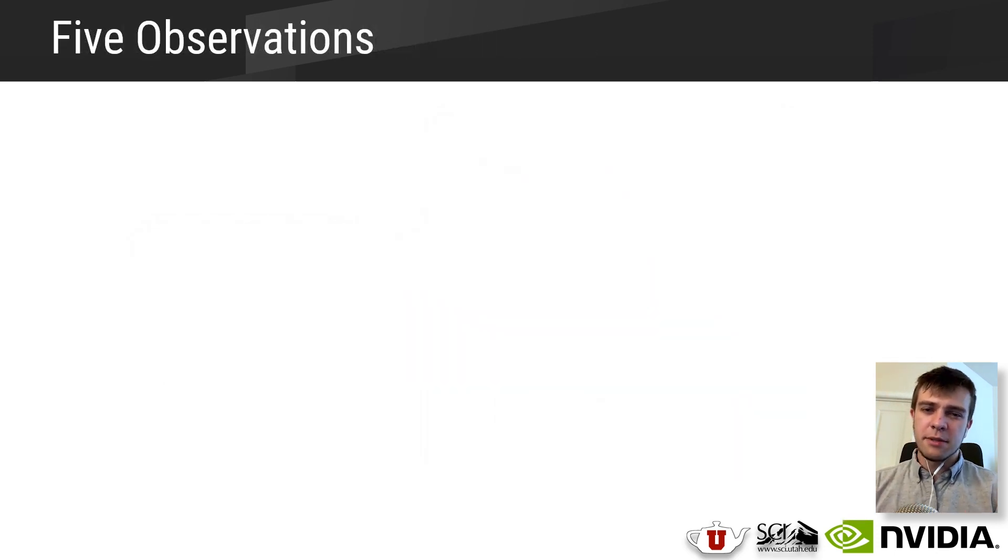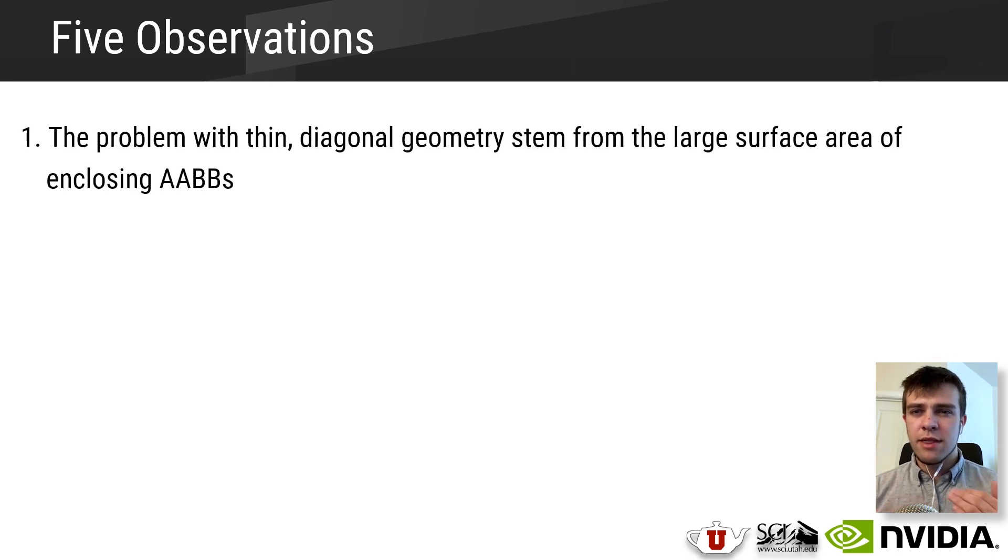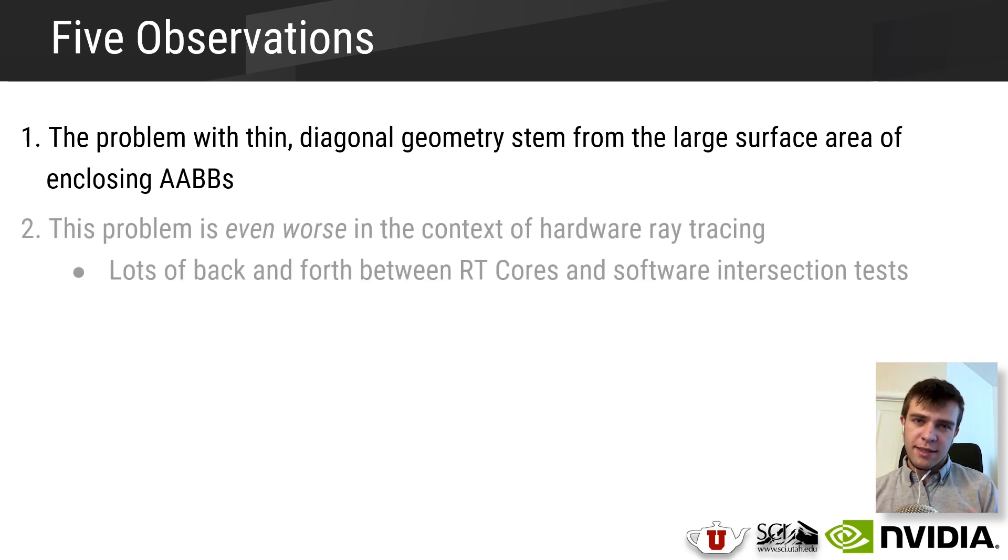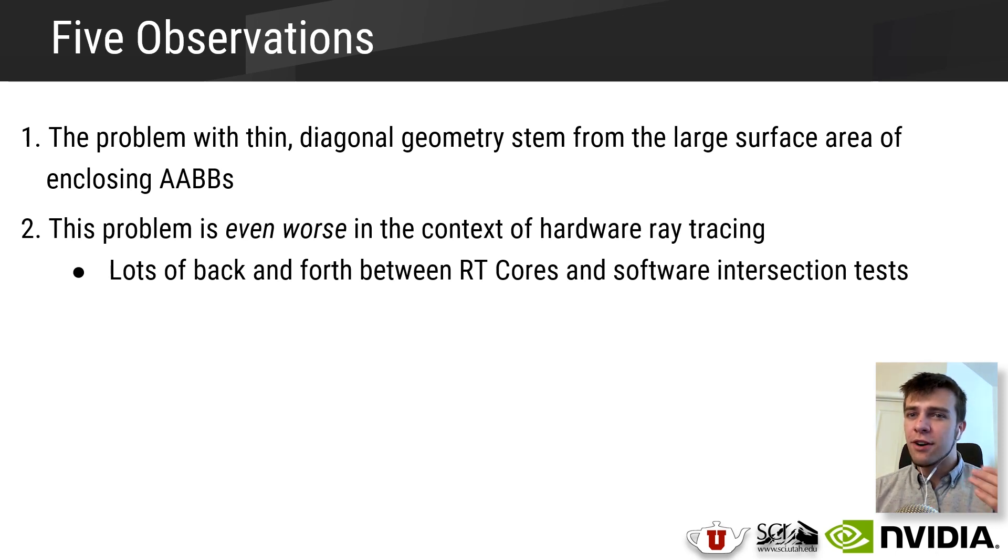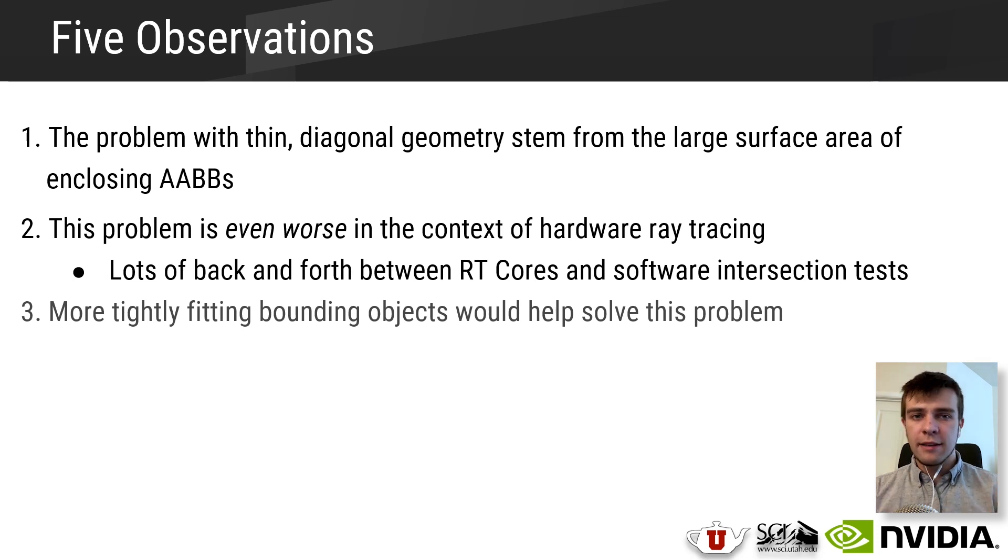At this point, we can make five key observations. The first observation is that this problem with thin diagonal geometry stems primarily from the large surface area of the enclosing axis aligned bounding boxes. Second, this issue is even more problematic in the context of hardware accelerated ray tracing. Since many of these thin primitive types must be intersected in software, the RT core must do an expensive context switch each time that the bounds of a primitive is hit. And since we're using these axis aligned boxes with poor culling performance, we'll be doing these context switches all the time.